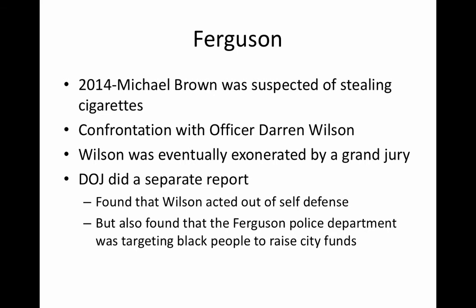The DOJ report provided stark examples: black people in Ferguson were pulled over and had their cars searched more often than white people, while white people actually had more contraband. And out of 21,000 black residents of Ferguson, 16,000 had outstanding court warrants issued against them. The DOJ basically said systematic racism was occurring within the police department.